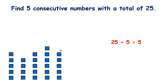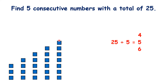We can keep the 4, 5, 6 we have in the middle. The group before the middle is 1 less and the group after the middle is 1 more. Now let's move two blocks from the first group to the last group. So now we have 3, 4, 5, 6 and 7. And if we add 3 plus 4 plus 5 plus 6 plus 7, we get a total of 25.